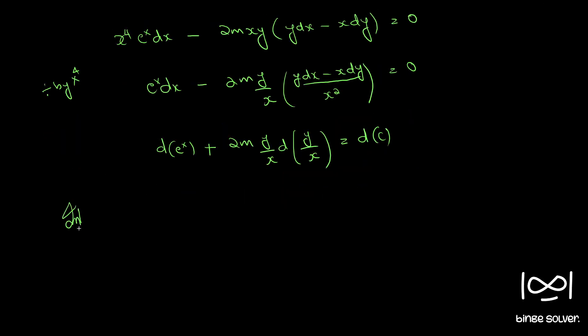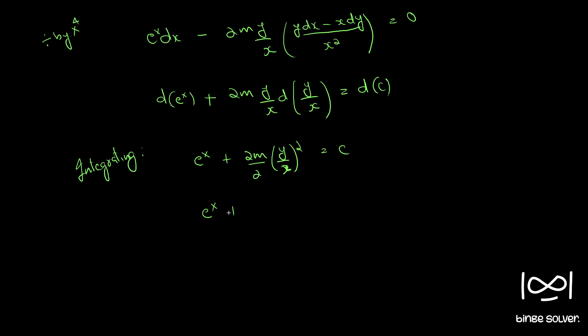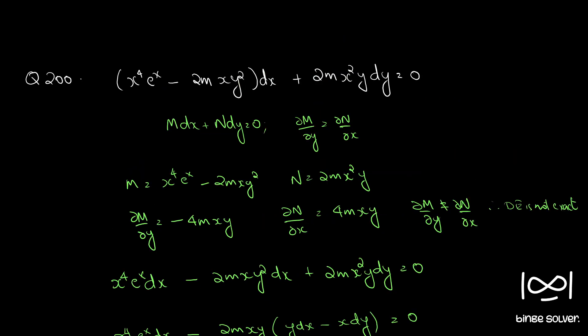So now integrating, we have e raised to x plus m (y over x) squared equal to C. This is the final solution to question number 200.